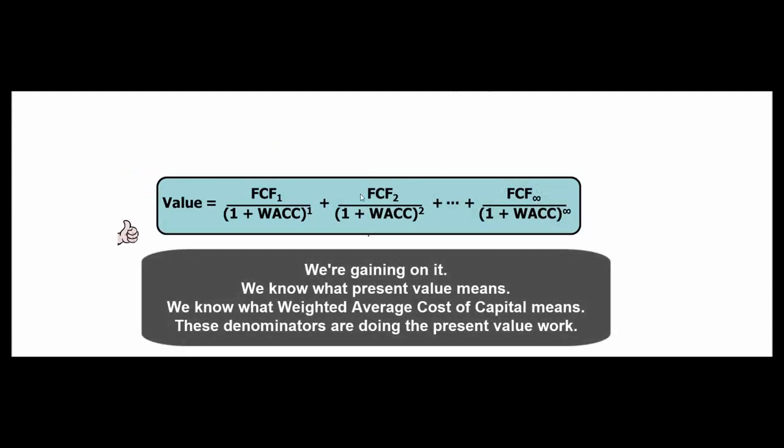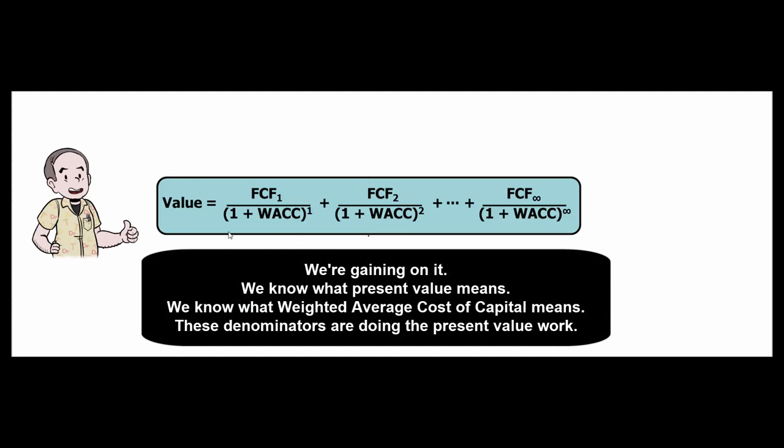Alright, we're almost there. We now know what present value means. We now know what weighted average cost of capital means. We now know what these denominators here mean. These denominators, they're doing the present value work for us. We're just left with what the concept of free cash flow is.